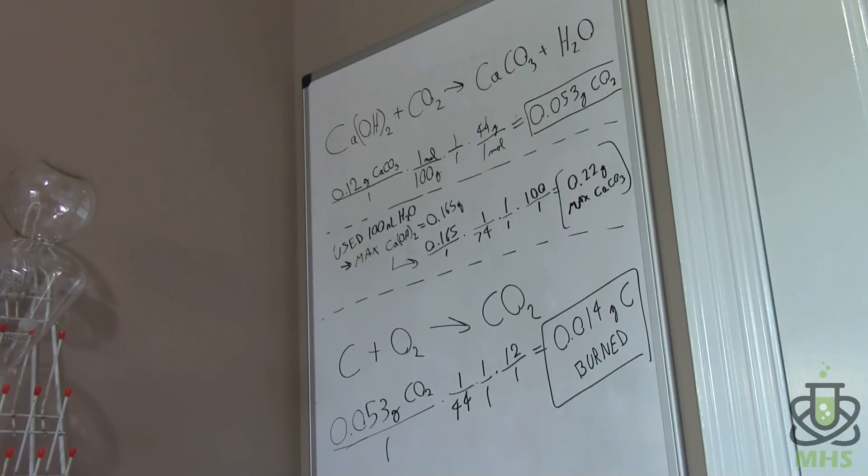I used 100 milliliters of lime water for the wash bottle. And so that means at room temperature, according to the solubility of calcium hydroxide, that's a maximum of 0.165 grams that was dissolved in that solution. So if you do the math on that, that means there is 0.22 grams is the maximum amount of calcium carbonate that we could have produced. So I didn't exceed that value. So I think that this is a valid result.